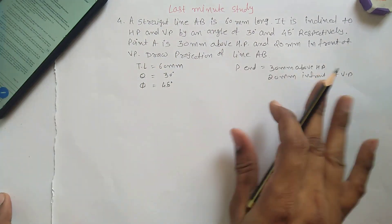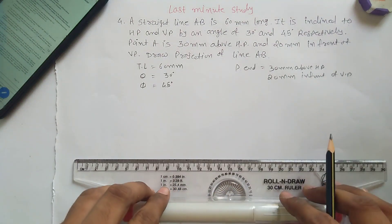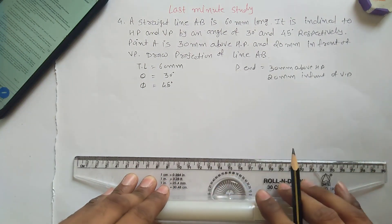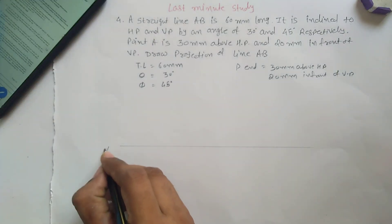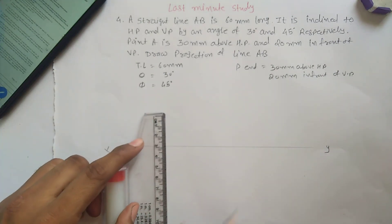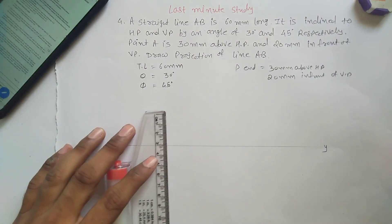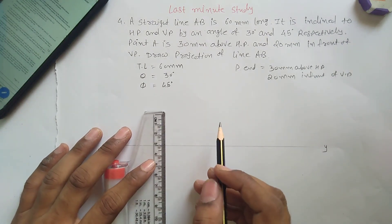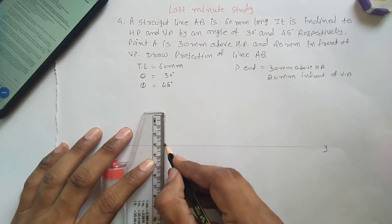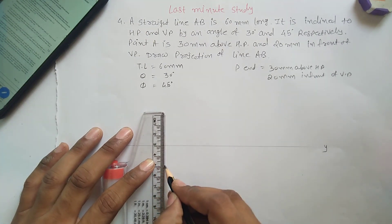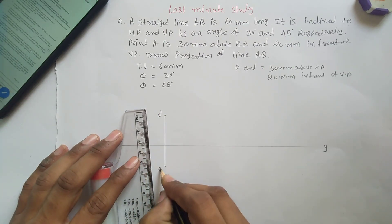This data is given, as we already discussed in previous problems. First of all, draw the XY line. Measure the distances — 30 mm above HP and 20 mm in front of VP — to find point A dash and point A. So this point is A dash and this point is A.